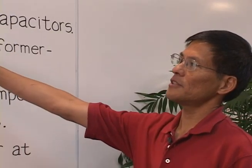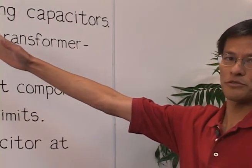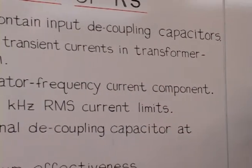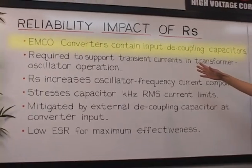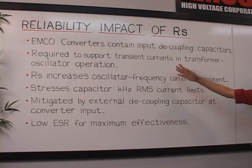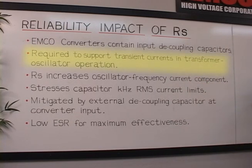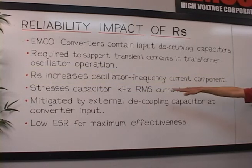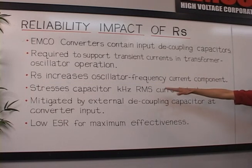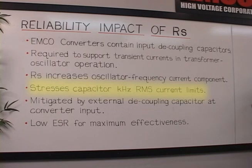In addition to efficiency, there's a reliability impact of source resistance on the operation of the converter. Input converters contain input decoupling capacitors, as we saw earlier in the block diagram. These capacitors are required to support transient currents that are inherent in the operation of the oscillator-transformer combination. The source resistance increases the oscillator frequency component of that current, which leads to stress on the input capacitor because the input capacitor has kilohertz range RMS current limits.